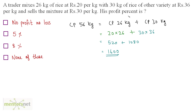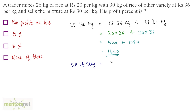Profit percentage is asked, so we need to calculate the profit, and for that we need the selling price — we already have the cost price. The selling price of 56 kg is calculated at Rs. 30 per kg, so 30 times 56, which equals Rs. 1680 — the selling price of the 56 kgs of mixed rice.